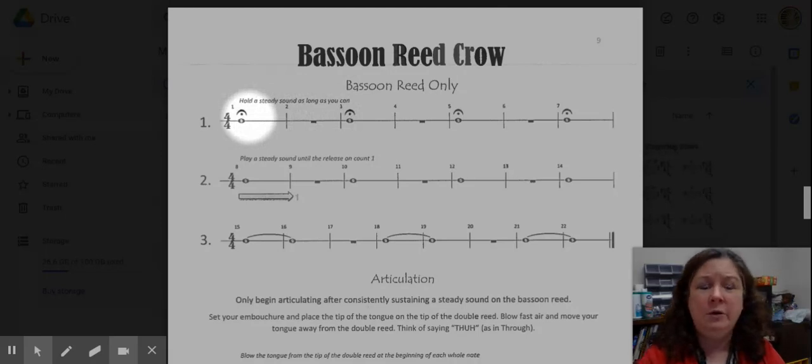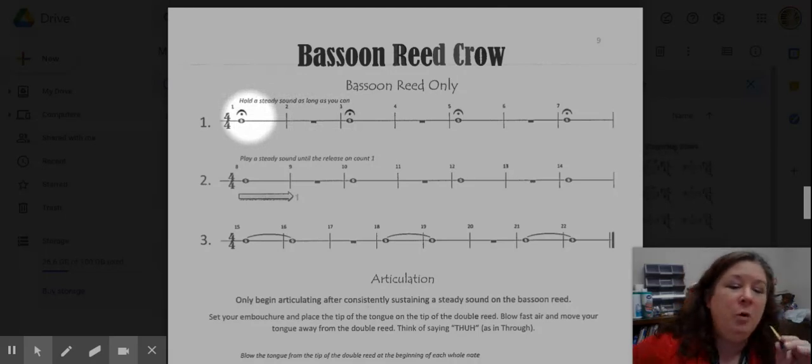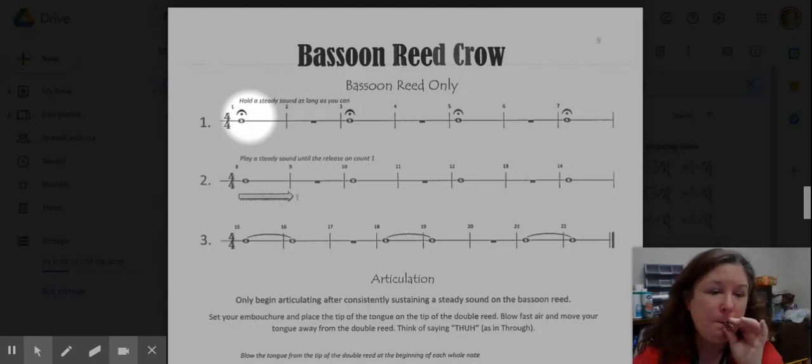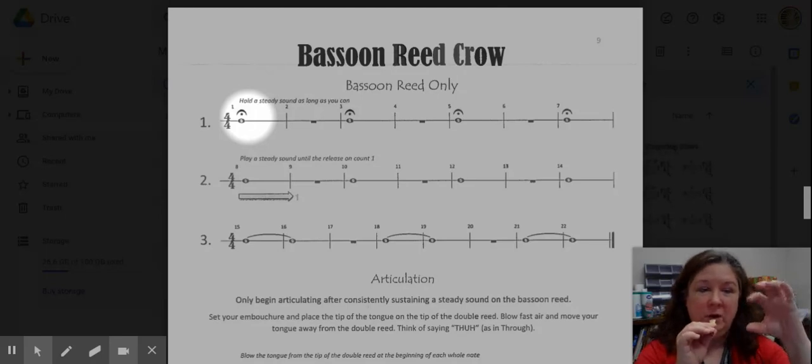So, sit up tall on your seat. Form your embouchure. So, remember you want to be just about touching the wire. Take a nice breath. And you're focusing on the sound of the crow, getting it right there in the middle so you hear those double pitches. Ready?